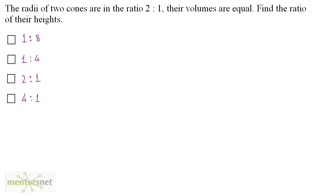The radii of two cones are in the ratio 2 is to 1. Their volumes are equal. Find the ratio of their heights.